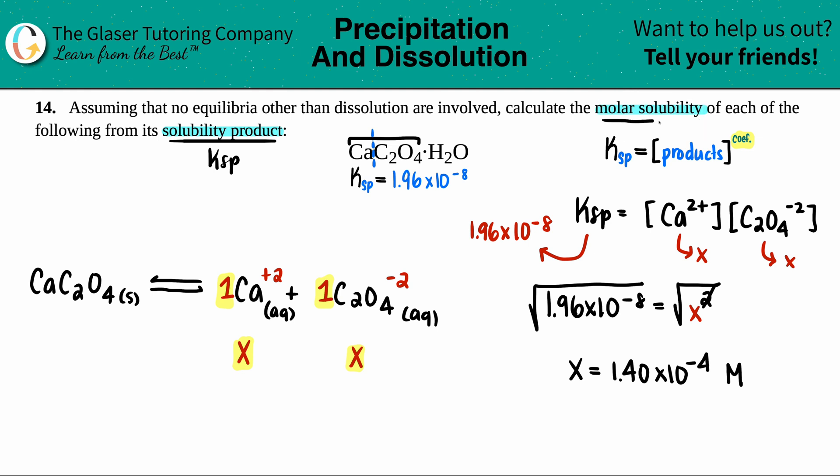But remember, molar solubility, molar solubility is always just asking for the original compound. So in this case, it would be the CaC2O4, the hydrate. But we could use it as the ratios.